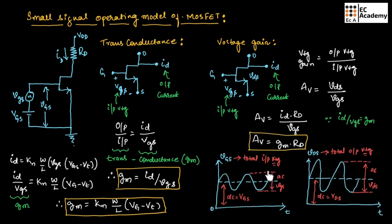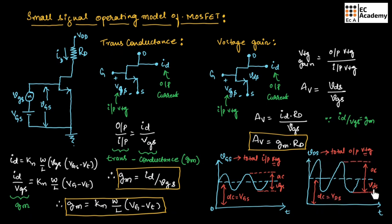This is the waveform for total input voltage, where DC voltage is VGS and AC voltage is small vgs, so small v capital GS is the total input voltage. Similarly, small v capital GS is the total output voltage, where DC voltage is VDS and AC voltage is small vDS. As you can see, compared to the input voltage, the output voltage is amplified.